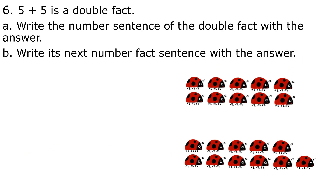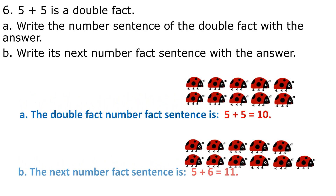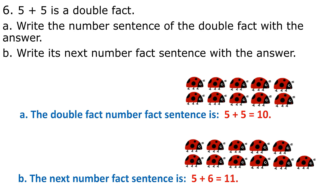Question 6. 5 plus 5 is a double fact. A. Write the number sentence of the double fact with the answer. B. Write its next number fact sentence with the answer. A. The double number fact sentence is 5 plus 5 equals 10. B. The next number fact sentence is 5 plus 6 equals 11.